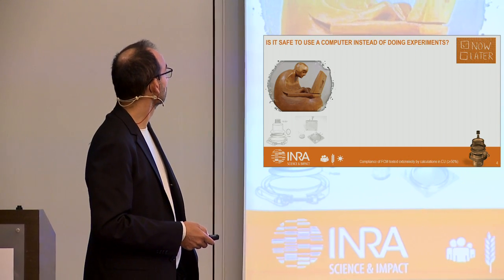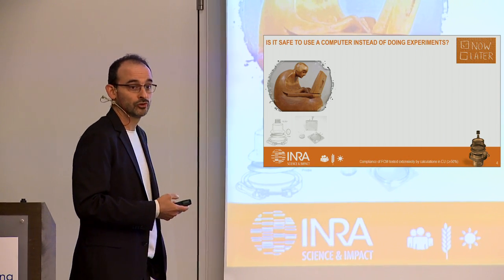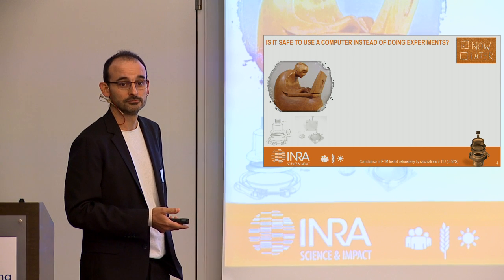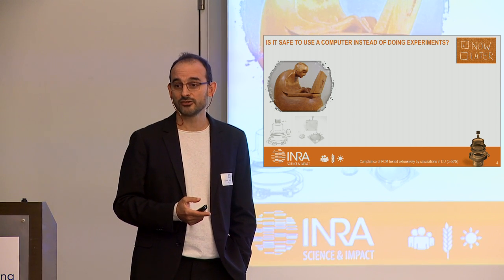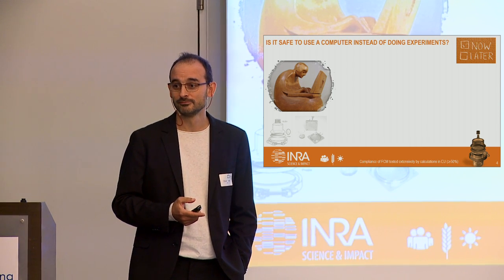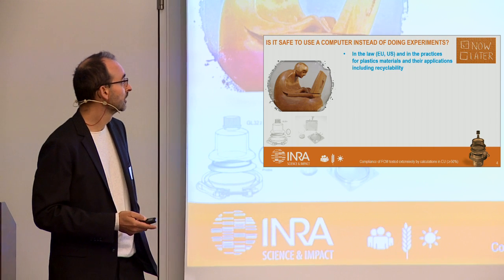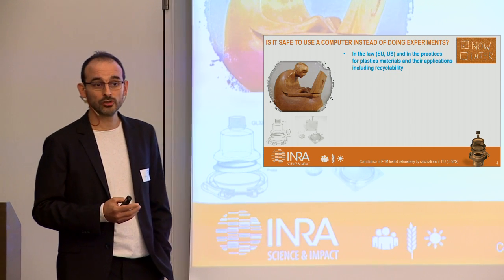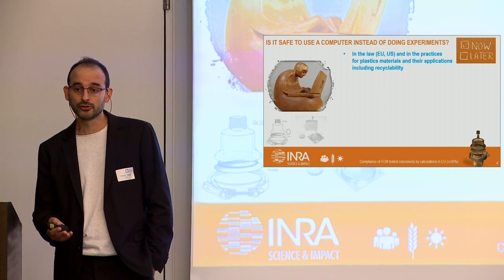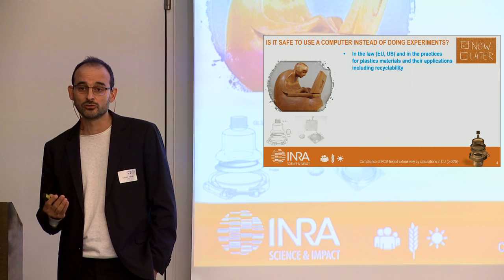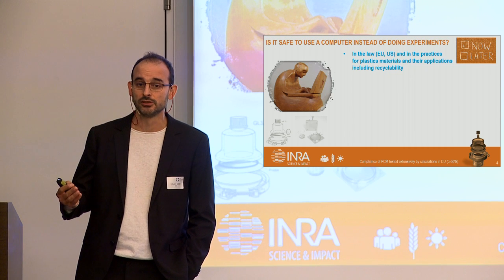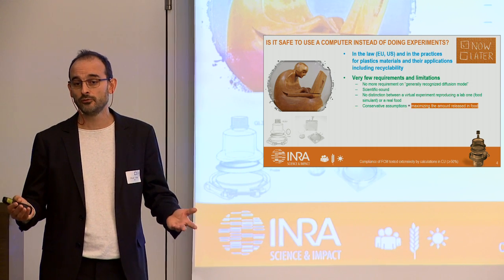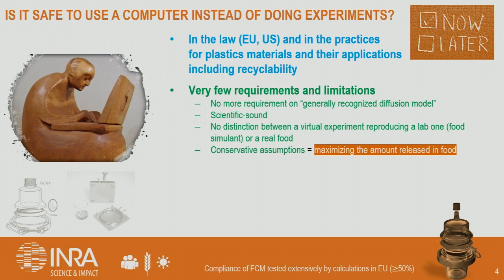Is it really safe to use a computer rather than doing experiments? That's perhaps a good question. Something that is certain is that when you use a computer you can get results faster — instead of waiting 10 days, you can have results in a few seconds or a few minutes. That means you can get very fast results.